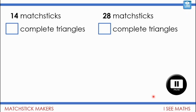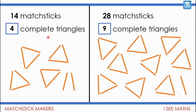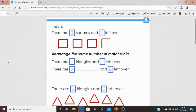Okay, let's have a look. 14 matchsticks: four lots of three is 12, so four complete triangles with two left over. 28 matchsticks: nine complete triangles — that doesn't seem right at first! But with 14 matchsticks you make four triangles with two left over, so doubling gives eight triangles, but then you can make another triangle with the two lots of two left over. So in total nine complete triangles — nine lots of three is 27, one left over, making 28.